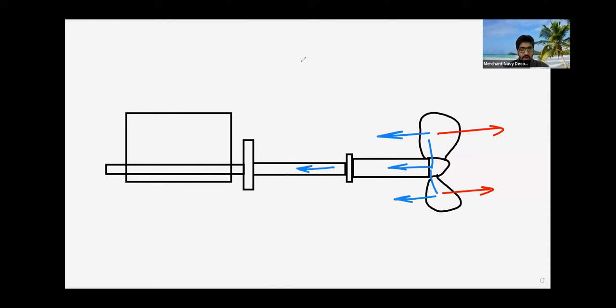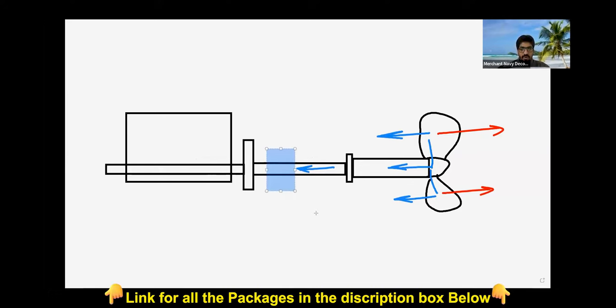We install one thrust bearing either here, which is an old concept, or you can fit that inside the engine itself. At the very back. So here. When we are near the propeller, when you have made an entry, this is where you keep the thrust bearing.